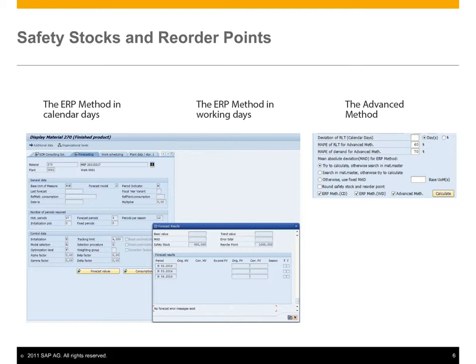With the safety stock and reorder point simulator add-on tool comes also an advanced method that also uses lead time, service level, and mean absolute deviation, but it also uses a variation in lead time and a variation in demand for the advanced method to calculate those values. The variation that you are using as the underlying basis for the calculation is something you can simulate right in the safety stock and reorder level simulator screen, as we'll see in the demo.